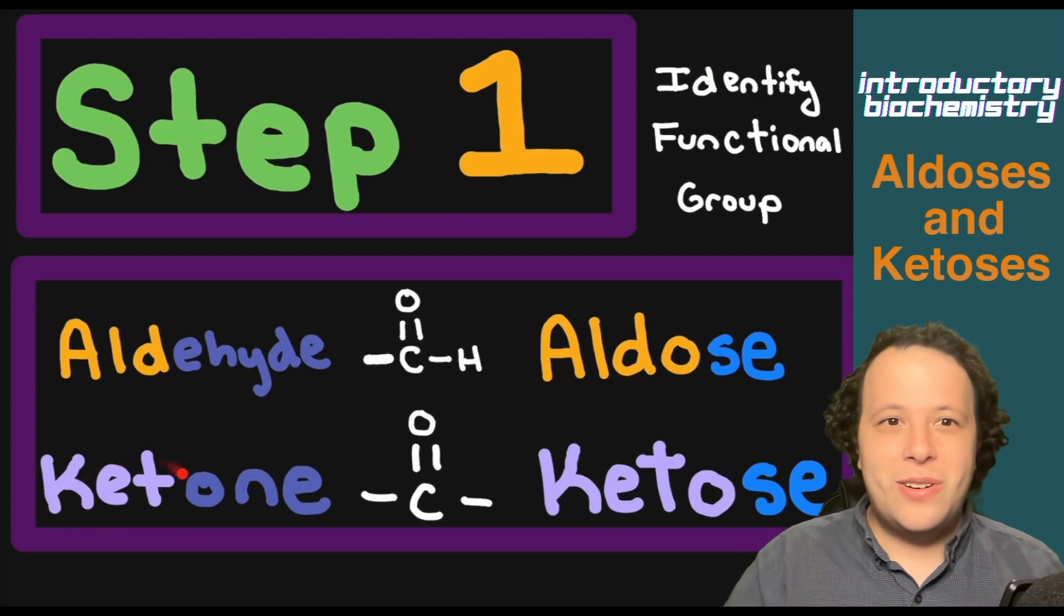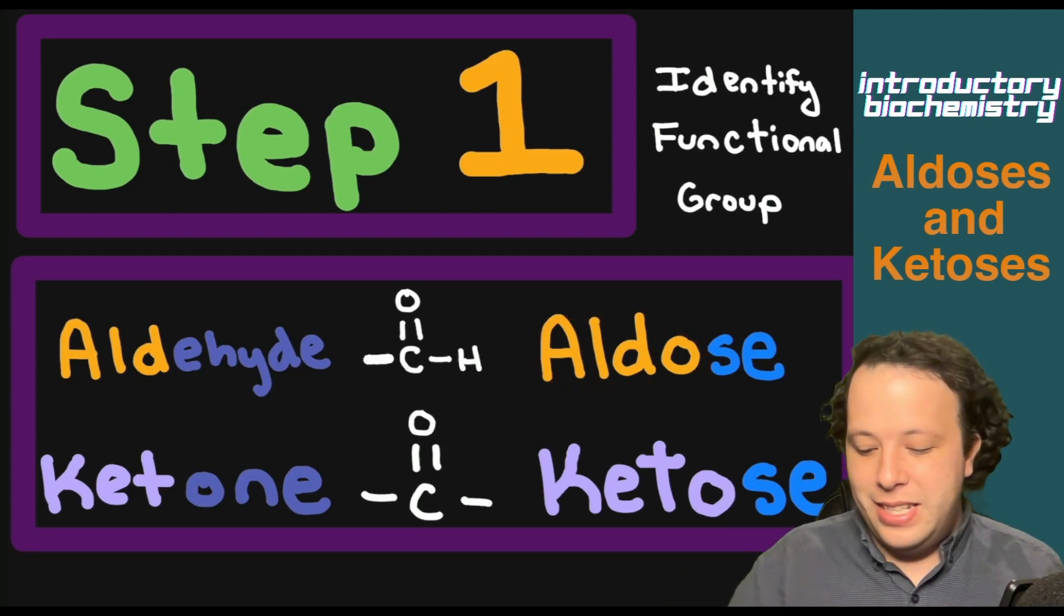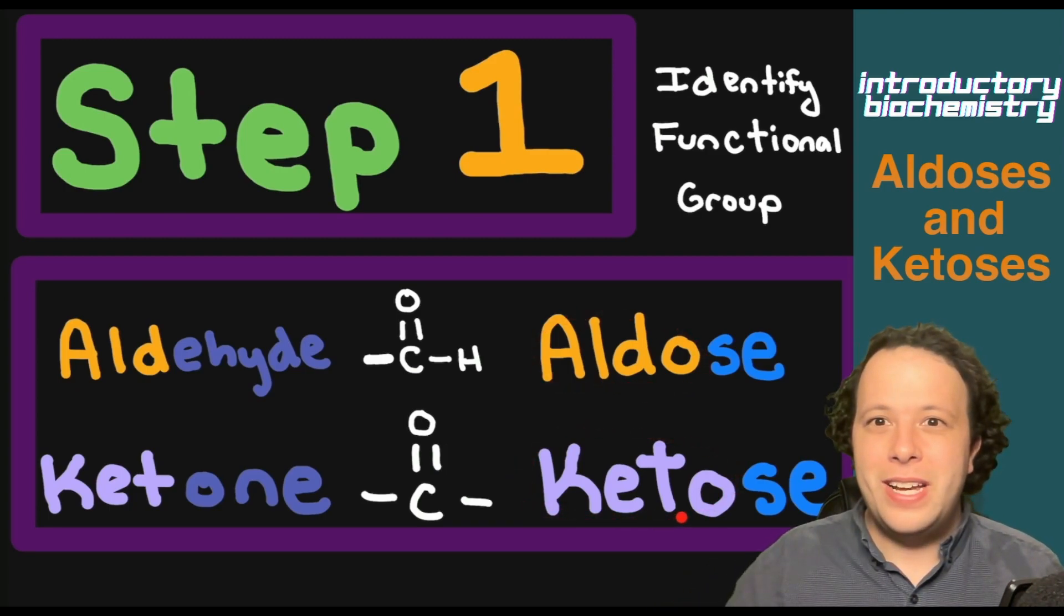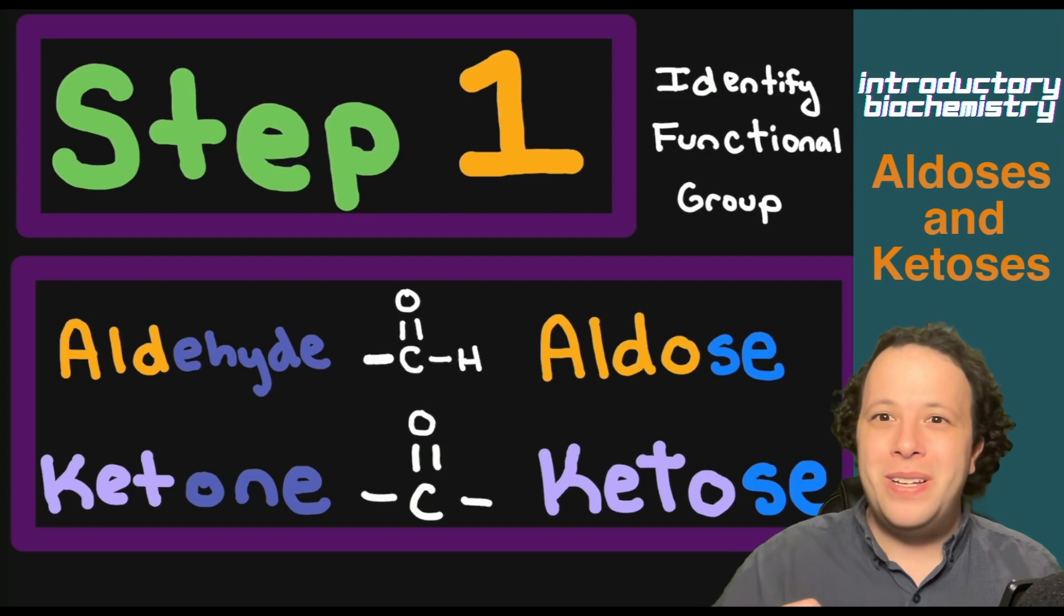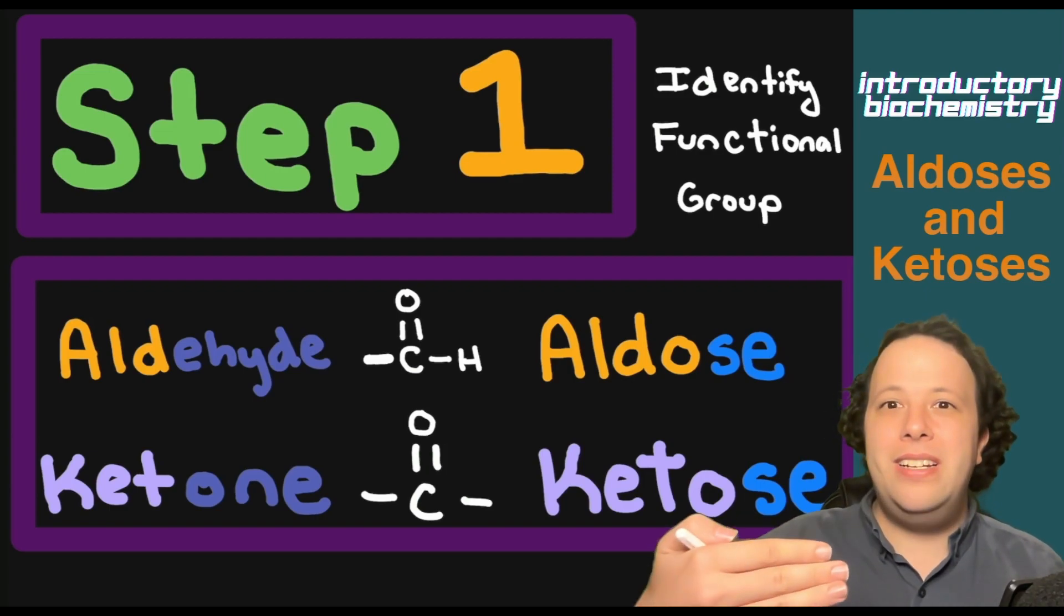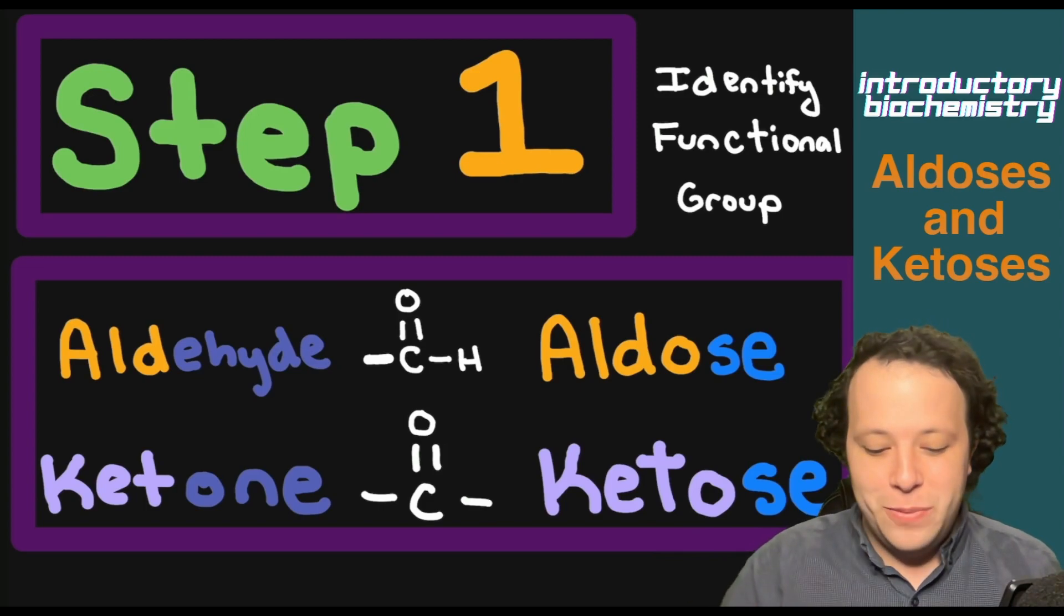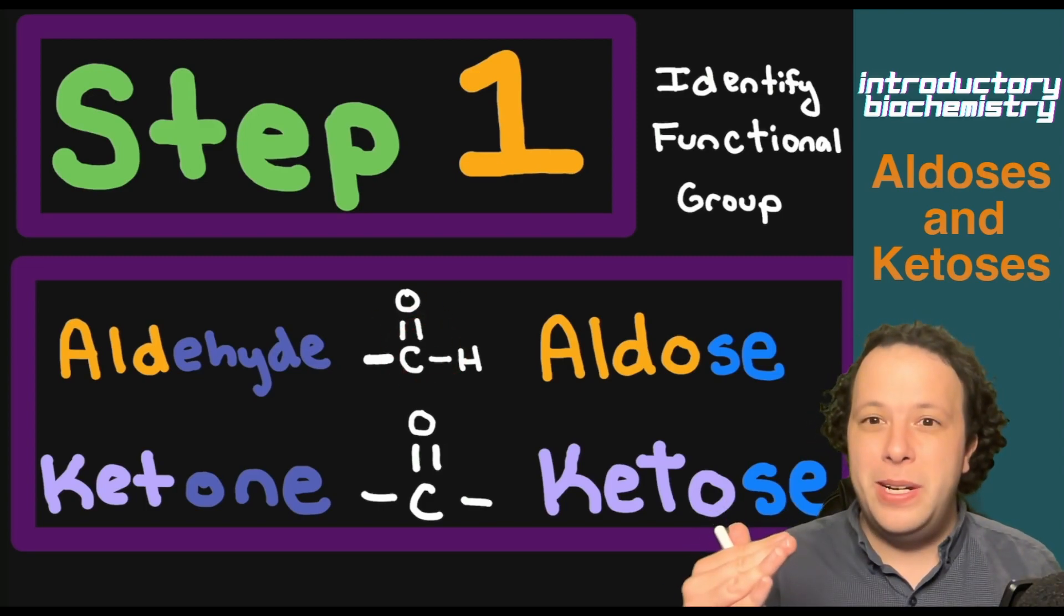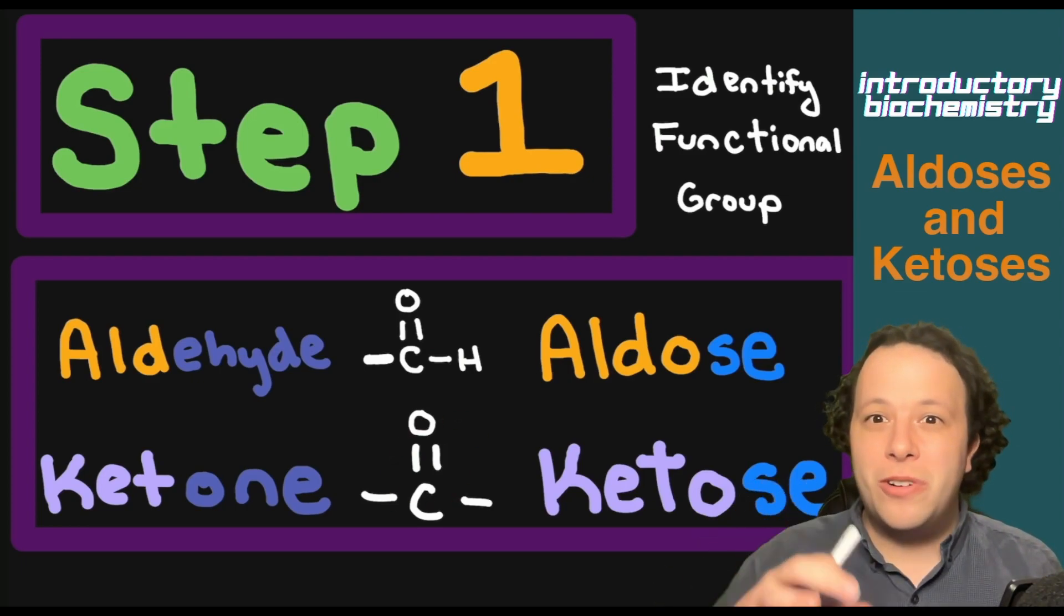With ketose or ketone, we take ketone and then we transform that into ketose. The reason why I highlighted these specific portions is that when you actually classify these, you're going to use the aldo or keto to help explain exactly what kind of carbohydrate or simple sugar you are looking at. And always remember the aldehyde or the aldose is always going to be on carbon number one, and the ketose will always be on carbon number two for simple sugars.